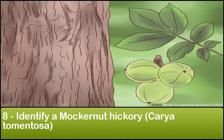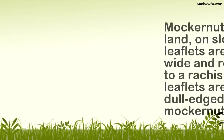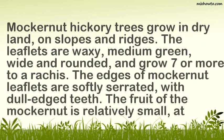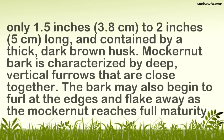Step 8: Identify a Mockernut Hickory (Carya tomentosa). Mockernut hickory trees grow in dry land, on slopes and ridges. The leaflets are waxy, medium-green, wide and rounded, and grow 7 or more to a rachis. The edges of mockernut leaflets are softly serrated with dull-edged teeth. The fruit of the mockernut is relatively small and contained by a thick, dark brown husk. Mockernut bark is characterized by deep, vertical furrows that are close together. The bark may also begin to curl at the edges and flake away as the mockernut reaches full maturity.